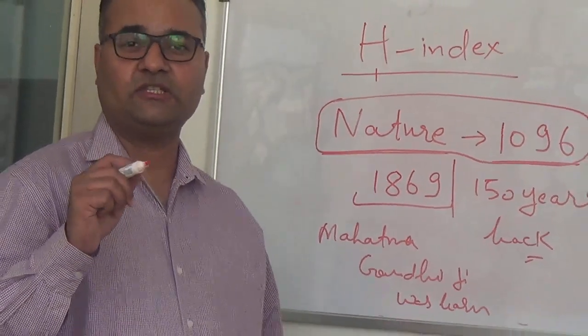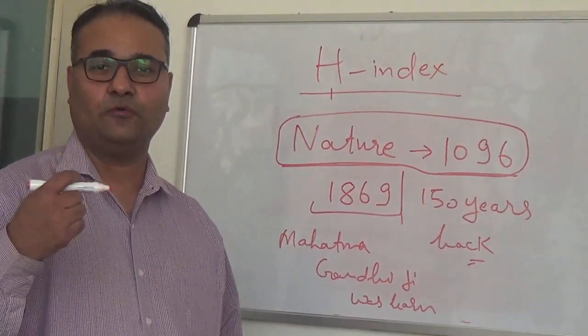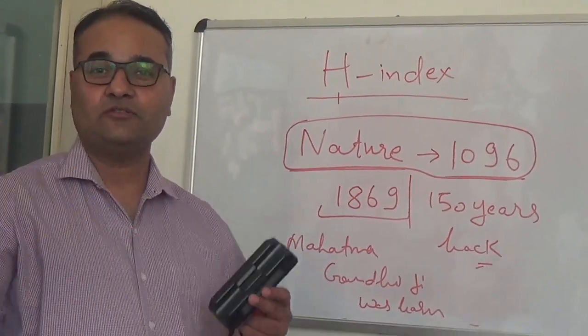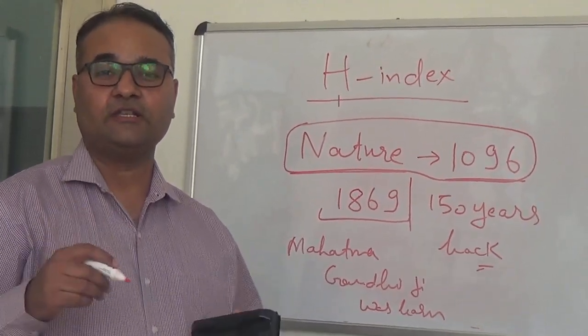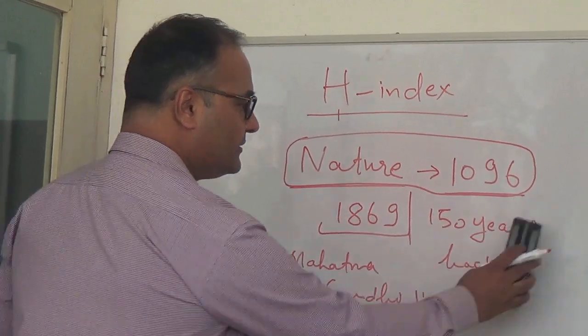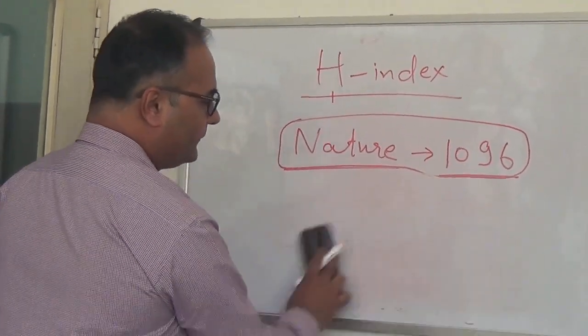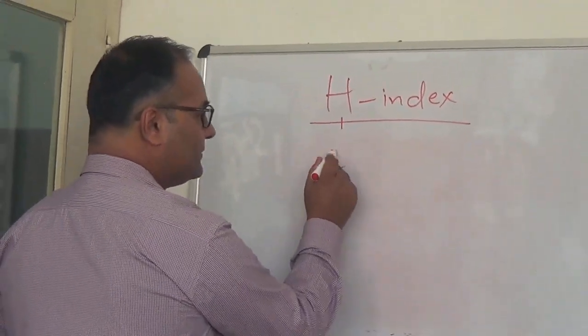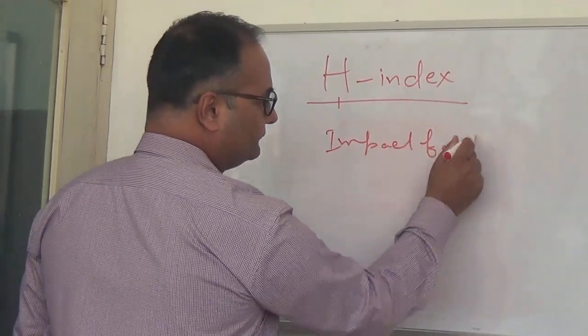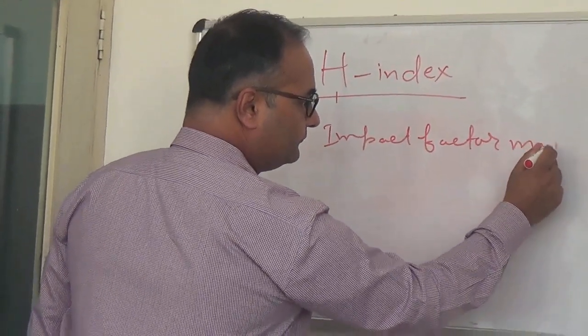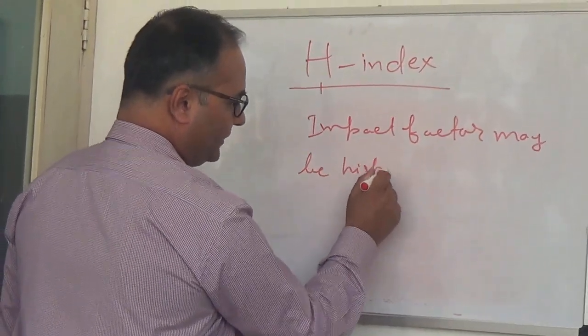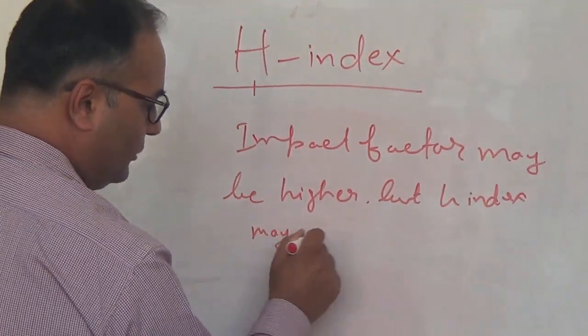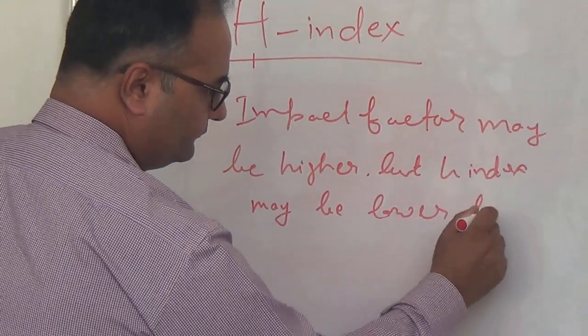So what does it mean? If there is a new journal which started its operations only a couple of years back, say 3 or 4 years back, although the journal might be good, because its age has not been that old, H-index might be relatively less. I know couple of journals which might be having H-index of only 4 or 5, but still the impact factor of those journals may be higher. Impact factor may be higher, but H-index may be lower for relatively new journals.